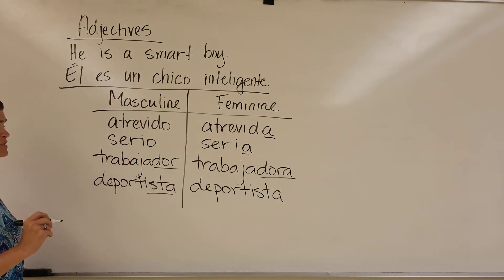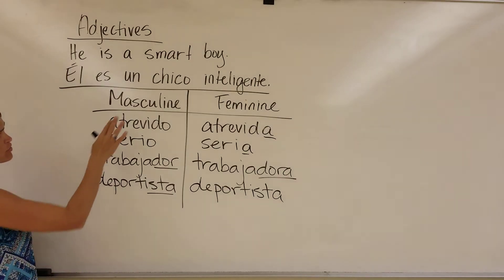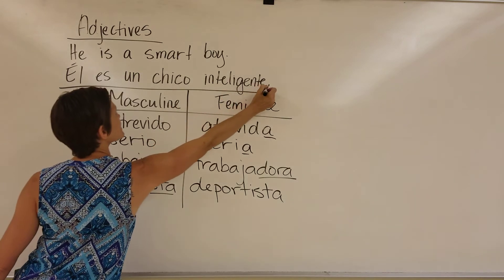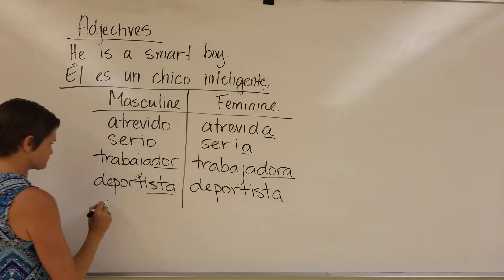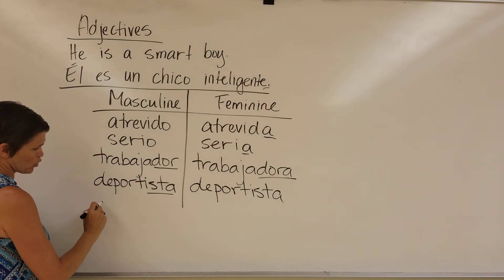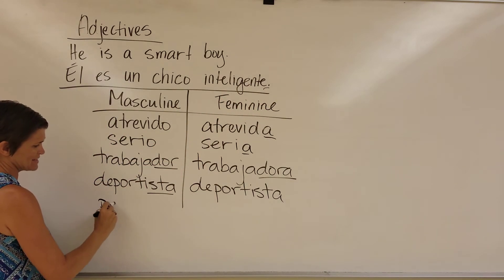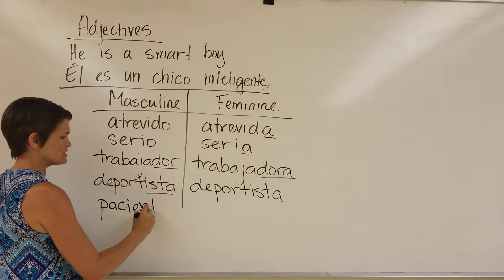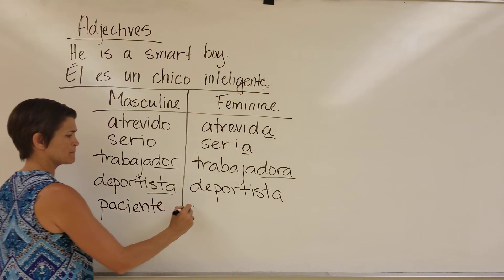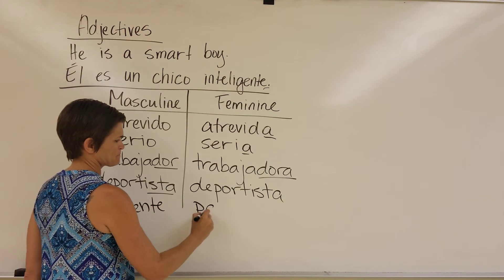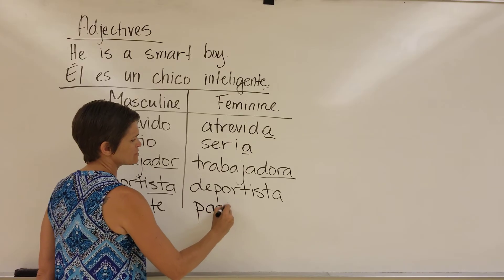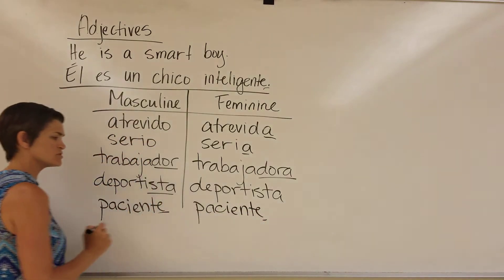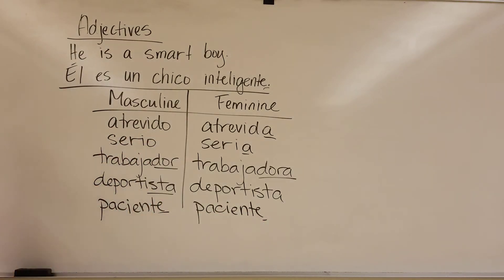The other adjectives with no change are all the ones that end in an E, like 'inteligente,' 'paciente,' or 'sociable.' If it ends with an E, it can be both masculine and feminine — there's no change there either.